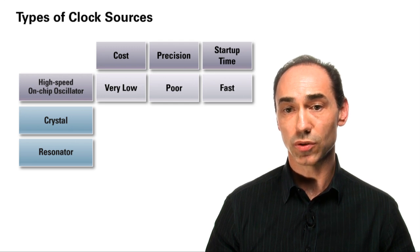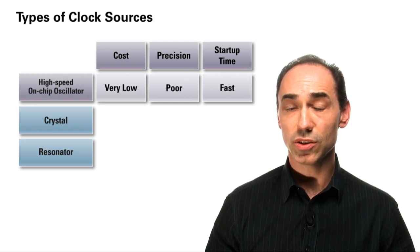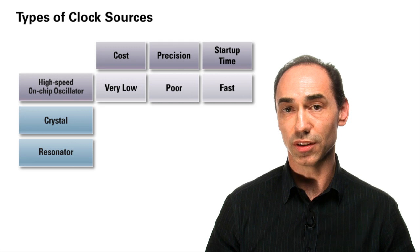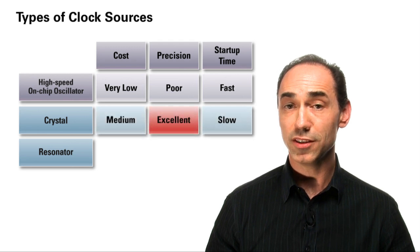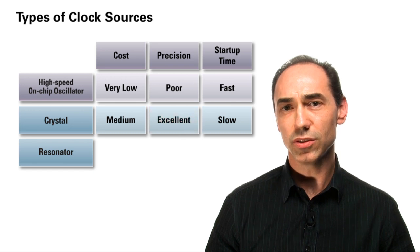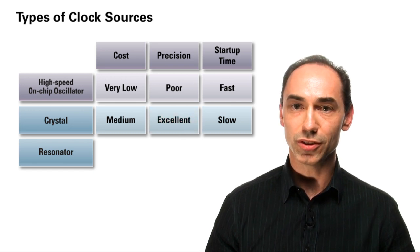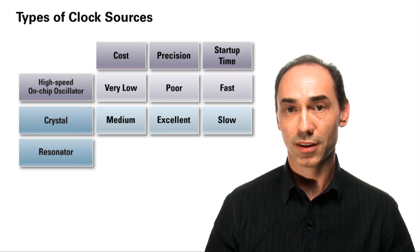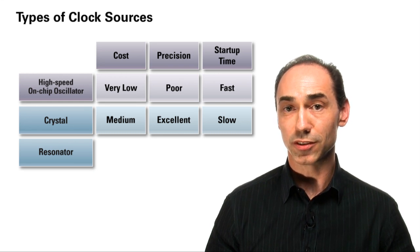Many high-performance microcontroller applications will use an external 4 to 16 MHz crystal as the main clock source. This is because crystals offer excellent precision. Another reason to use crystals is for low power. There are 32 kHz crystals which have been optimized for low power. These crystals also offer excellent precision.